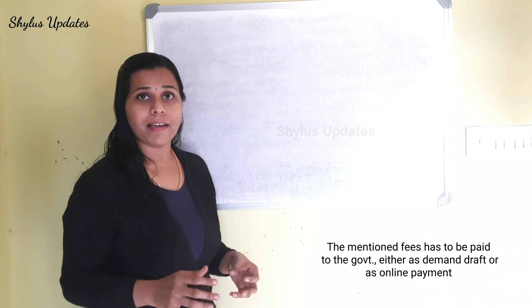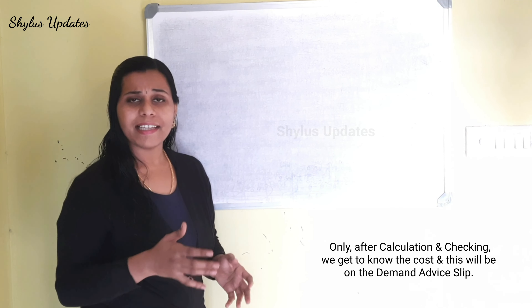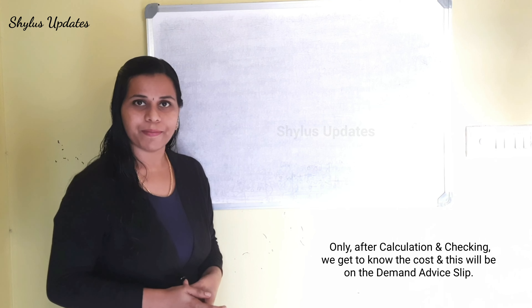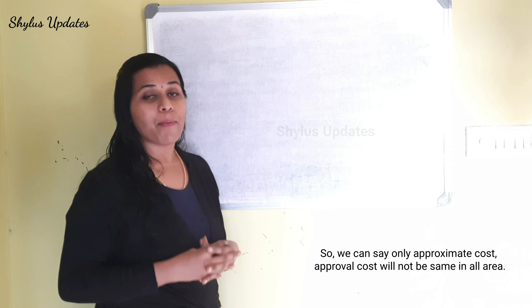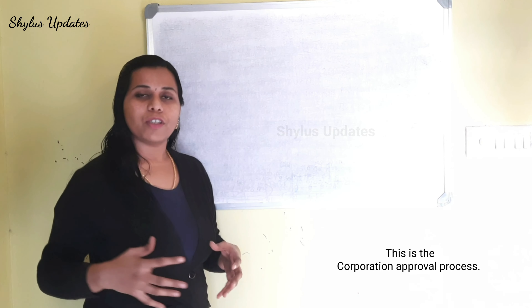Many of you may wonder how much it will cost to get approval. The honest answer is that no one exactly knows the cost beforehand. Even the Assistant Engineer who is signing the document doesn't know the exact cost before calculation. Only after calculation and checking do we get to know the cost, and this will be shown on the demand advice slip. So we can only say the approximate cost. Approval cost will not be the same in all areas.